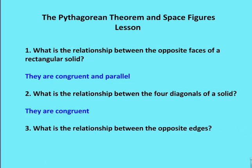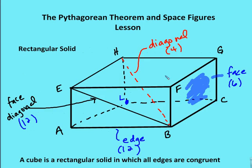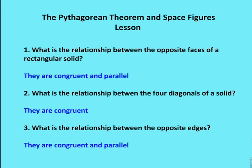Finally, what is the relationship between the opposite edges of a rectangular solid? Opposite edges, such as AB and LC, are going to be congruent and parallel. So to summarize: opposite faces are congruent and parallel, the four diagonals are congruent but not parallel, and opposite edges are congruent and parallel.